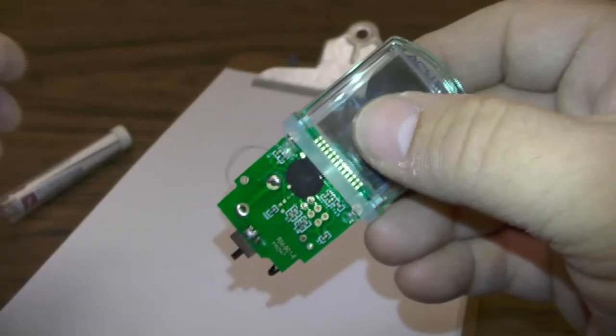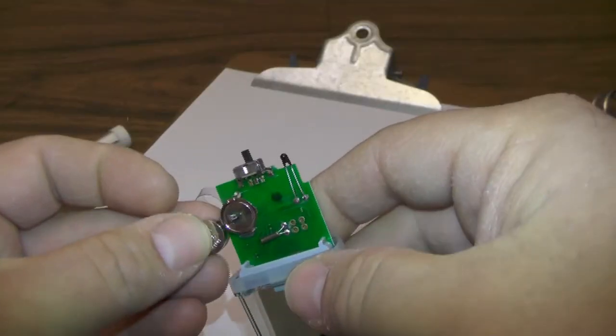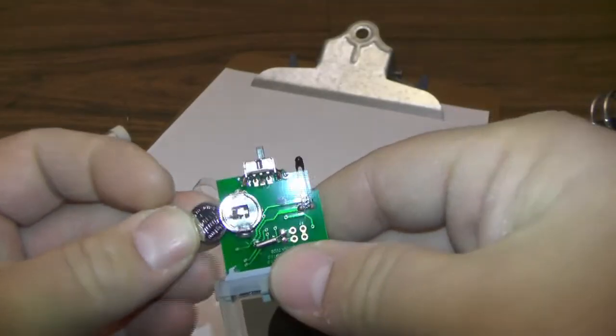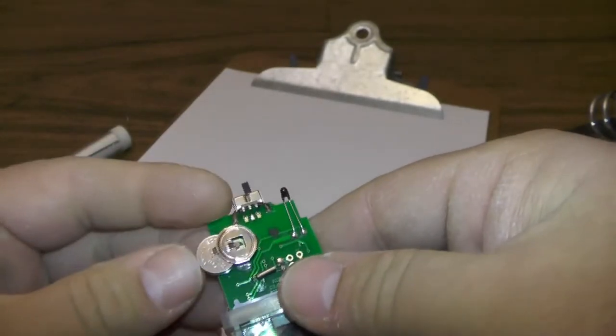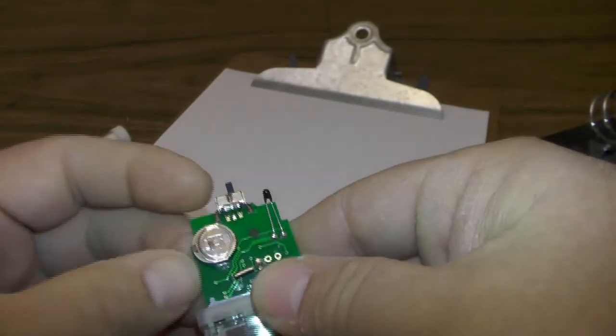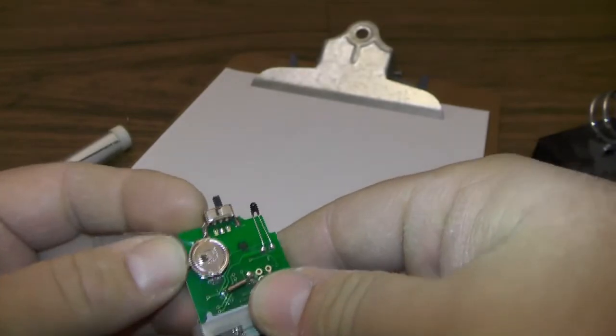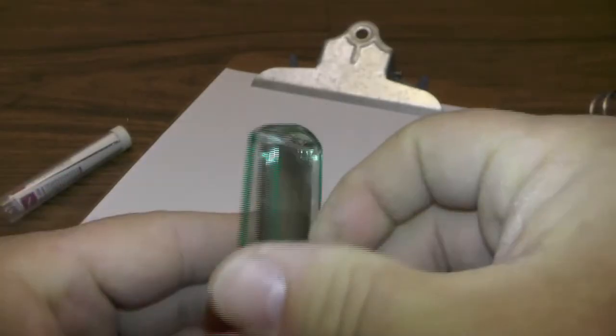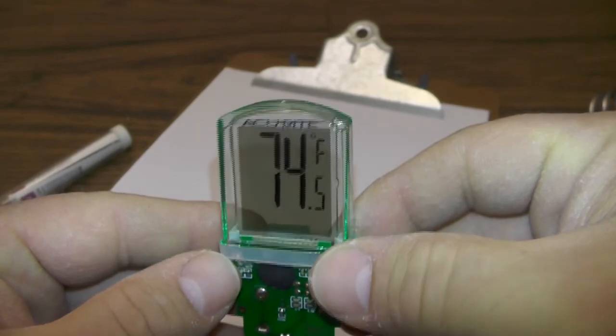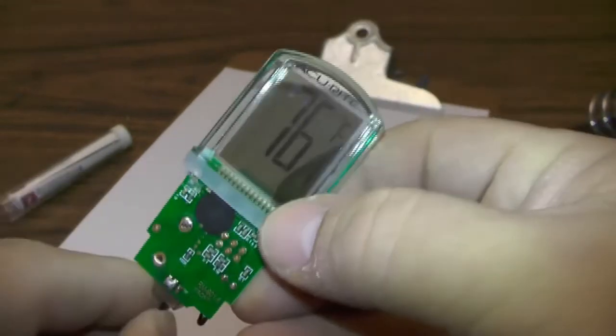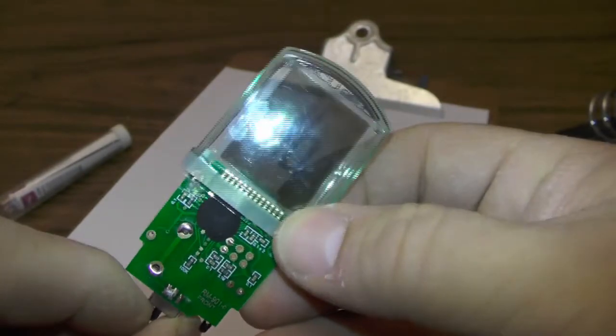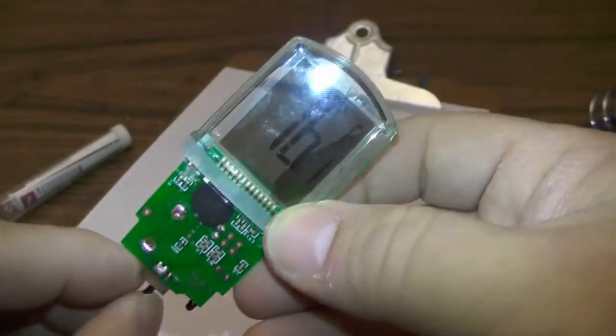So just give it a second to cool, pop in the new battery here. This little plastic is really handy for taking the battery out. There we go. And look at that, we have temperature reading. All right now the switch doesn't matter if it's on or off, it's always going to have power flowing.